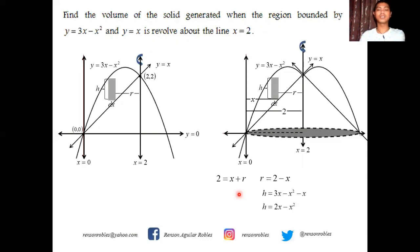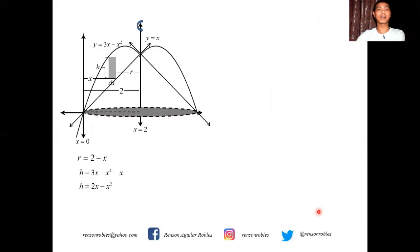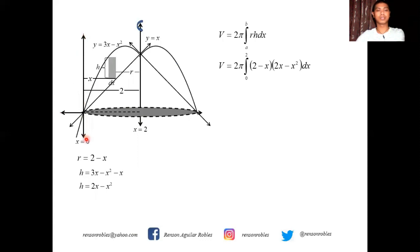Similarly, h = (3x − x²) − x = 2x − x², that's y_upper minus y_lower. Writing it in the integral formula: V = 2π ∫ (2 − x)(2x − x²) dx, evaluated from 0 to 2, since 0 is the leftmost and 2 is the rightmost portion of the region.